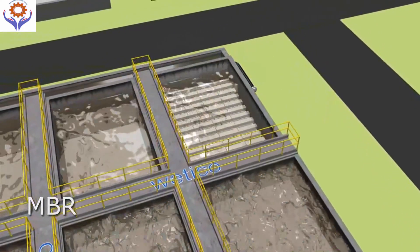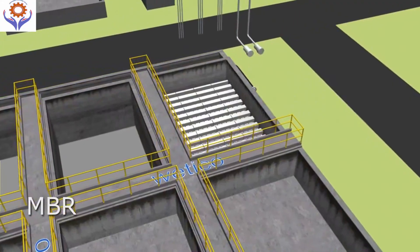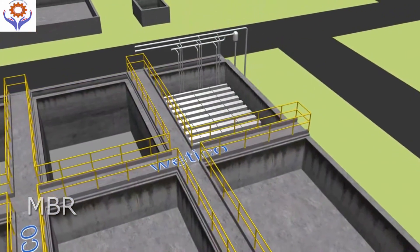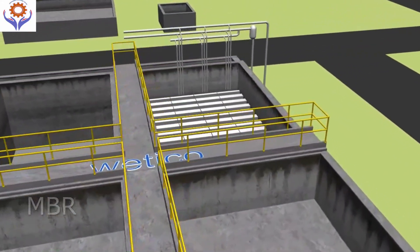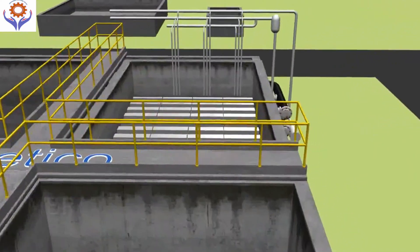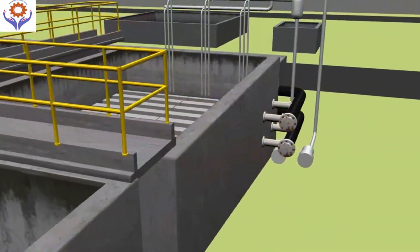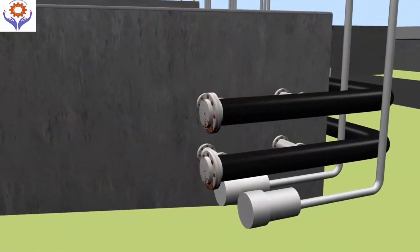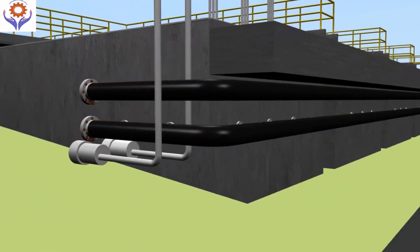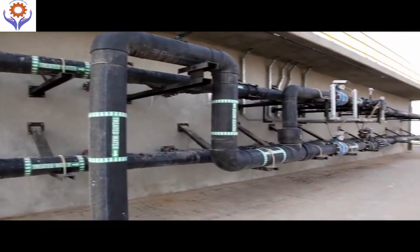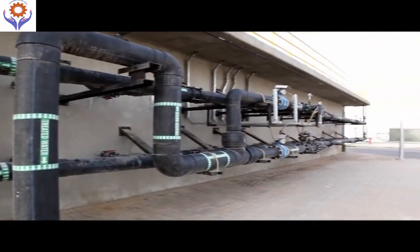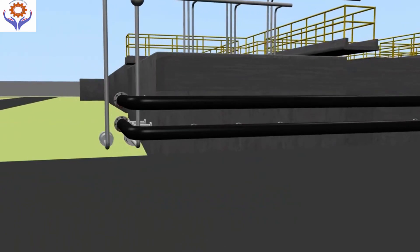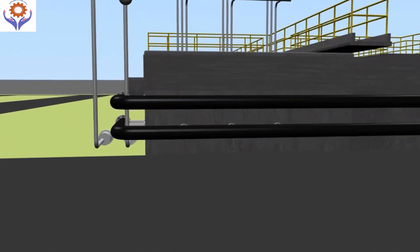MBR system. The treated water passes through MBR membrane filters, also called a membrane bioreactor or MBR. Membranes separate clean water from microorganisms. Very fine particles and bacteria are removed.